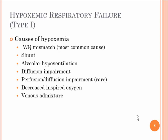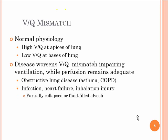Causes of hypoxemia. Here's a list — we're going to talk about these individually. VQ mismatch is the most common, and that's nice because it's usually easily fixed. Others include shunt, alveolar hypoventilation, diffusion impairment, perfusion-diffusion impairment, decreased inspired oxygen, and venous admixture.